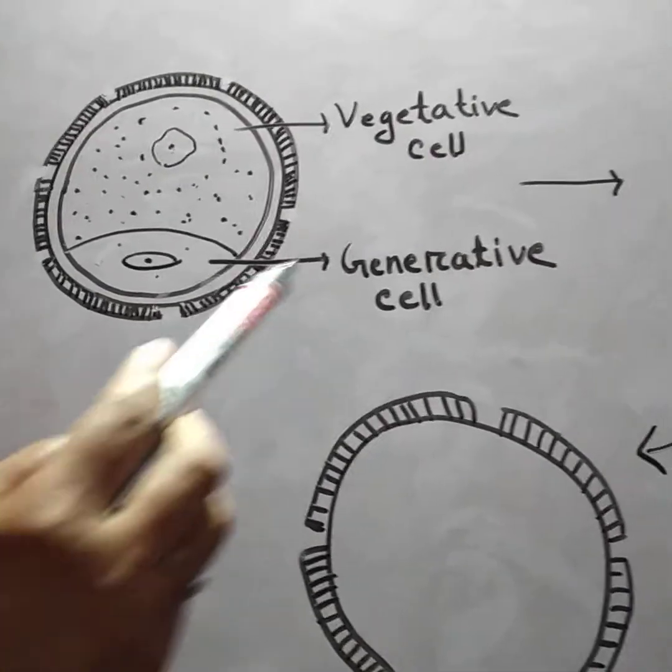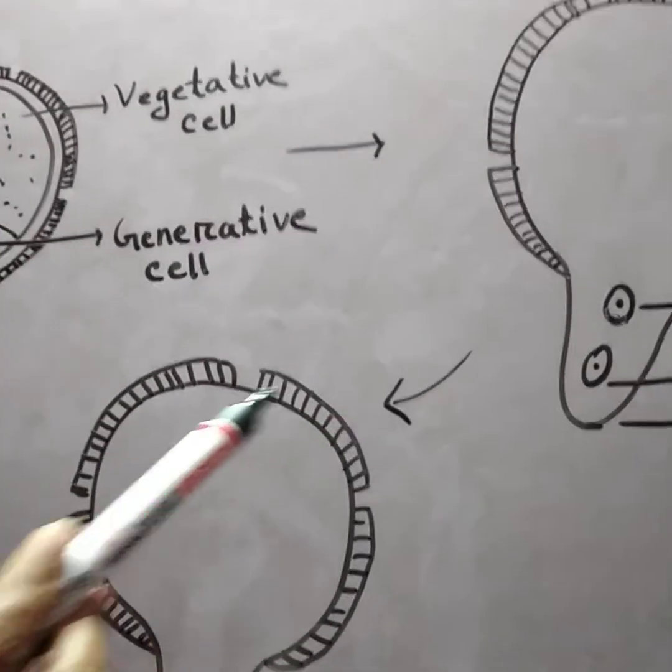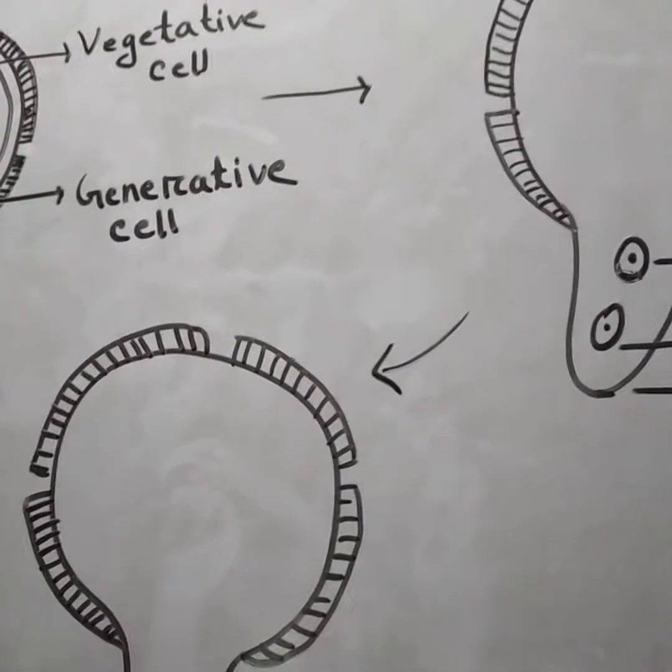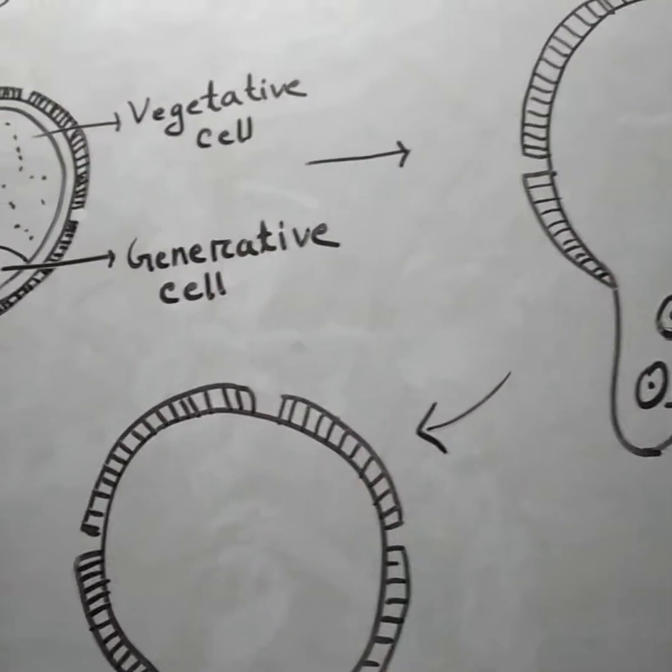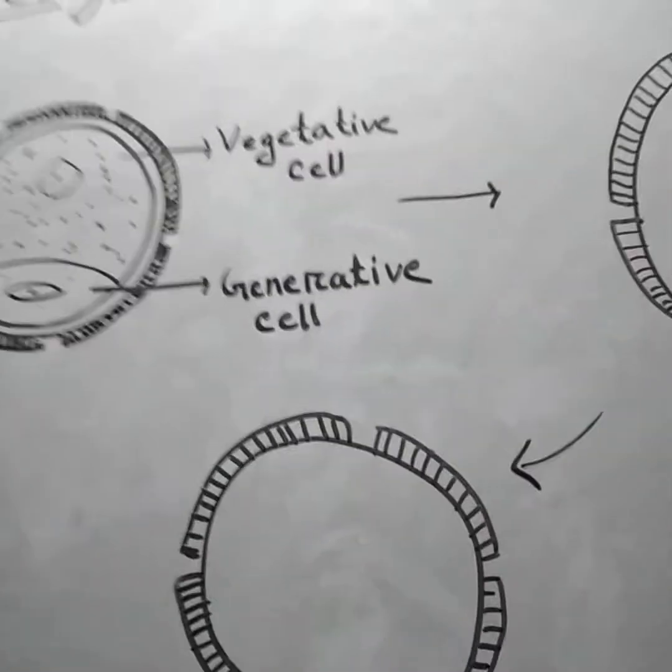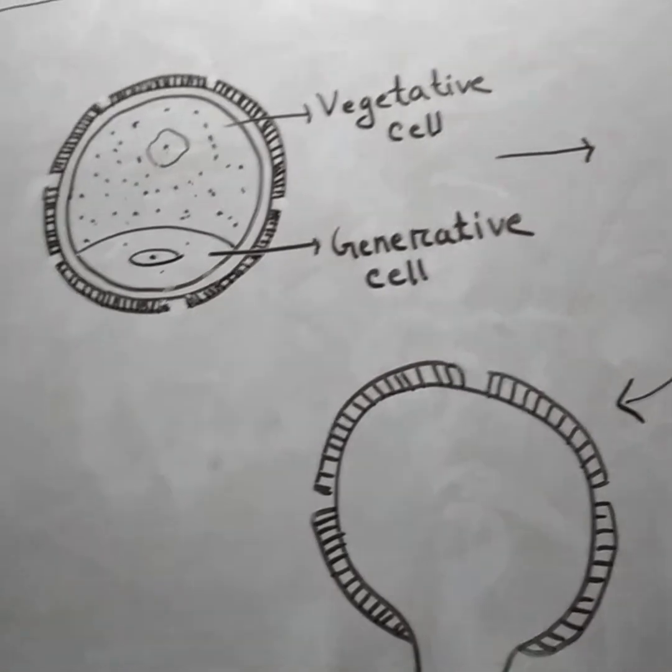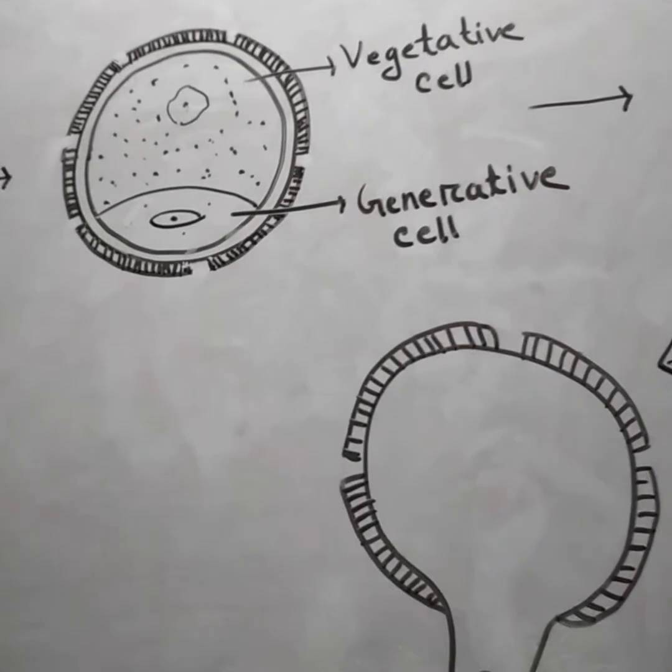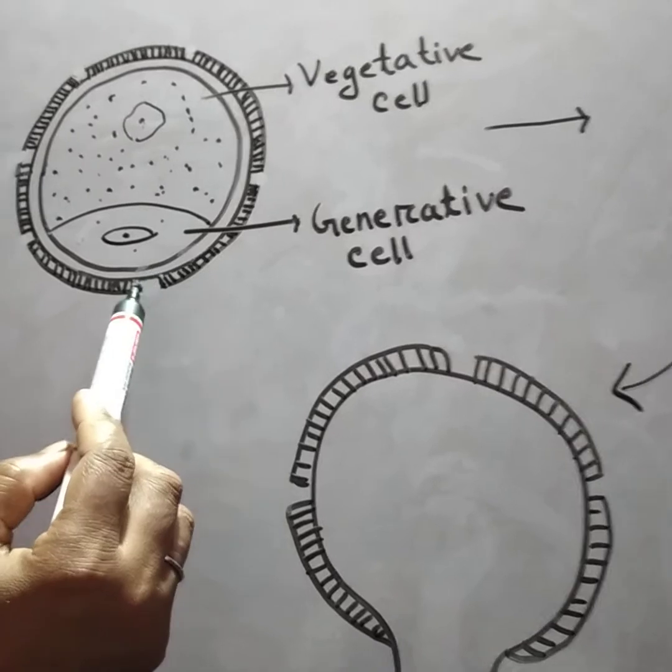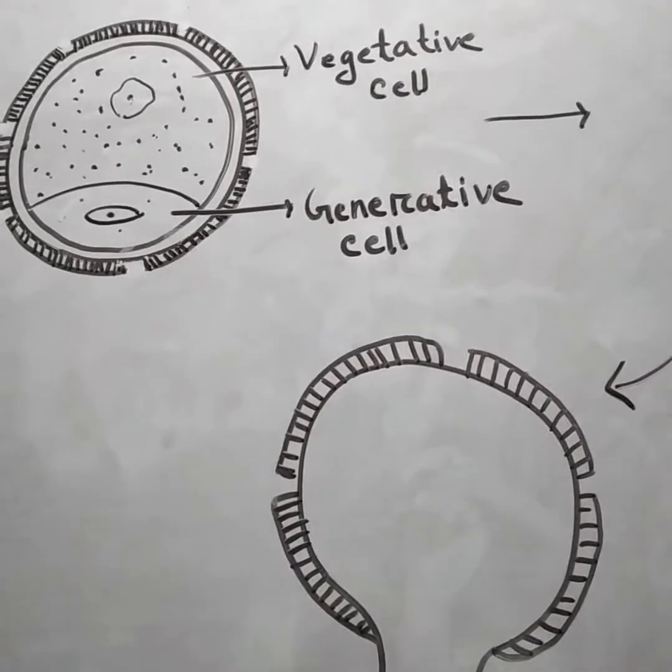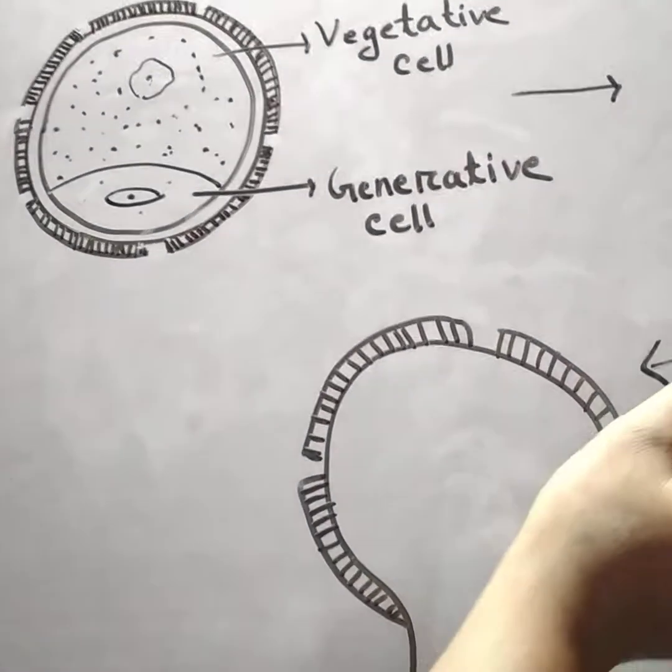After pollination, pollen grains are stimulated by the secretion of the stigma to germinate. At the time of germination, the exine breaks and then forms the pollen tube.